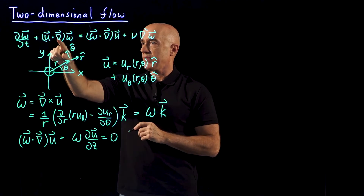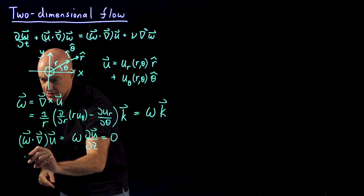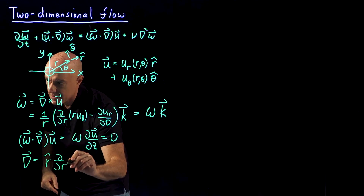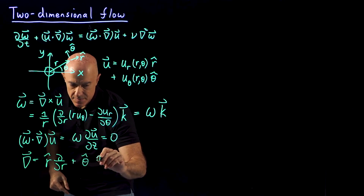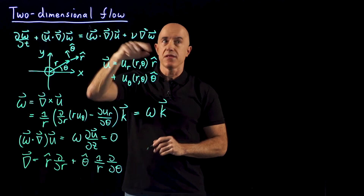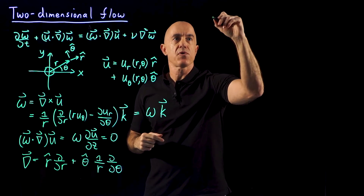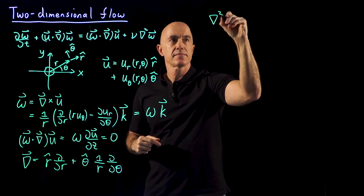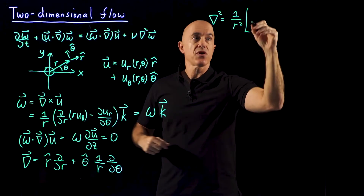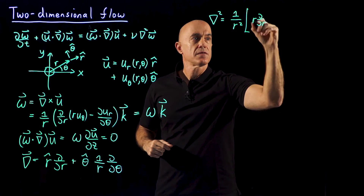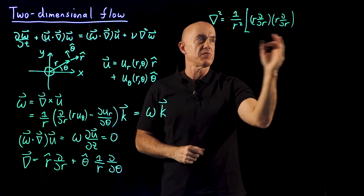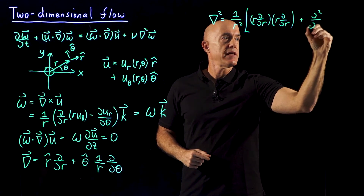We need to write the gradient operator in polar coordinates: del equals r hat (d/dr) plus theta hat (1/r)(d/dtheta). And we need the Laplacian in polar coordinates: del squared equals (1/r²) times (r d/dr)(r d/dr) plus d²/dtheta². This is one of the many ways you can write the Laplacian.